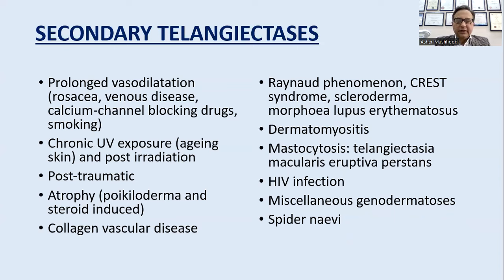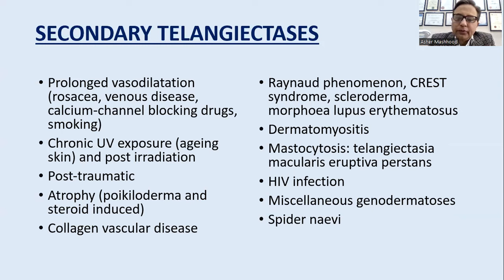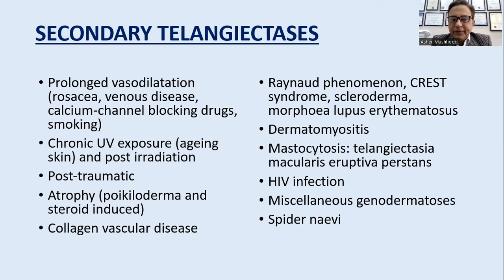Secondary telangiectasias develop secondary to some pathology. Causes include prolonged vasodilation such as rosacea, venous disease, calcium channel blocking drugs, and smoking. Chronic UV exposure in aged skin or post-irradiation, post-traumatic causes, skin atrophy from steroids or poikiloderma are also causes. Telangiectasias are seen in collagen vascular diseases especially scleroderma and dermatomyositis, Raynaud's phenomenon, CREST syndrome, lupus erythematosus, mastocytosis presenting as telangiectasia macularis eruptiva perstans, HIV infection, and several genodermatoses.